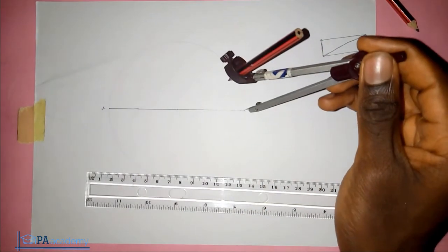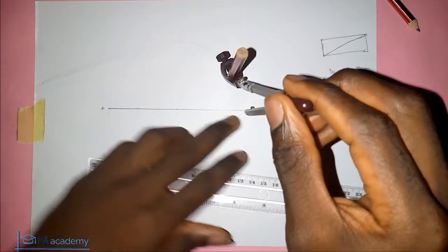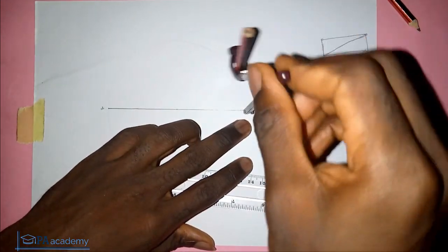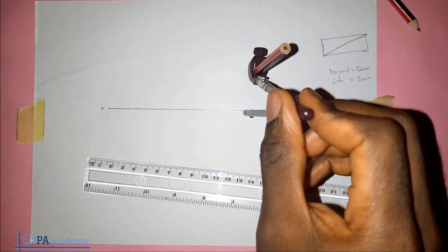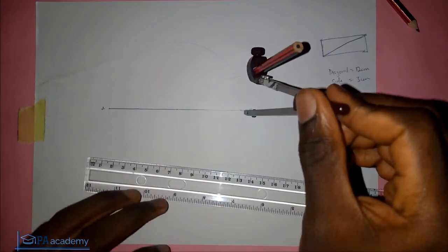So from point B, we are going to cut a part on the circumference. So that is cutting this, this is the point. Upward.